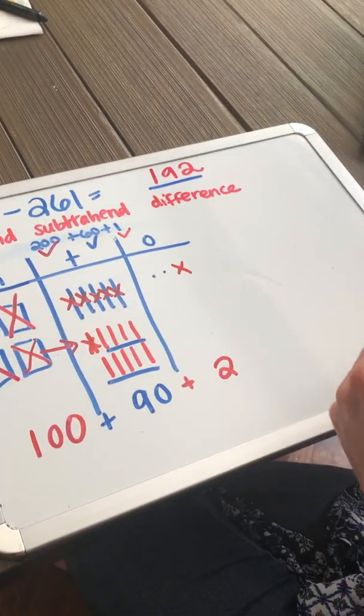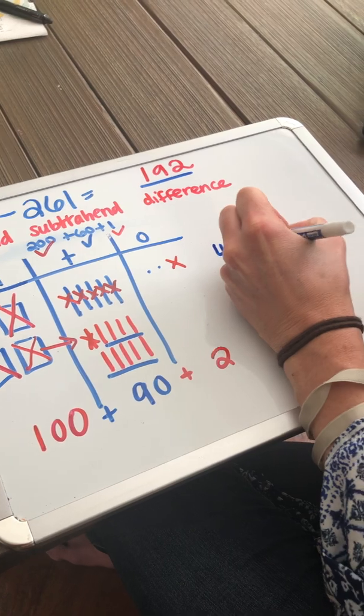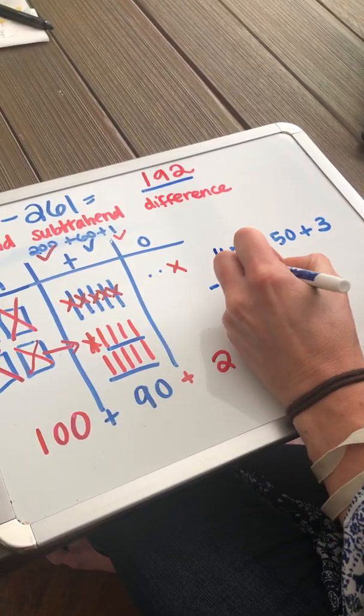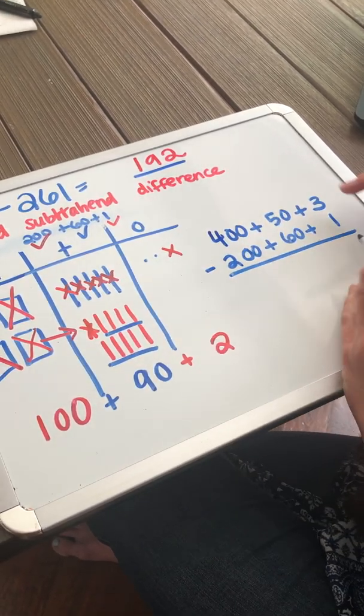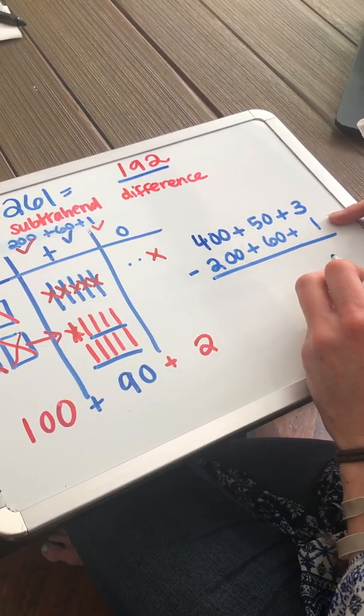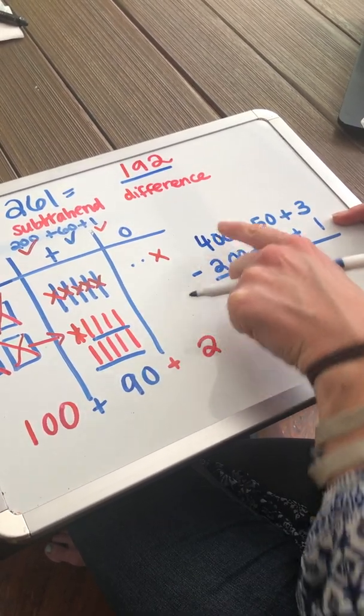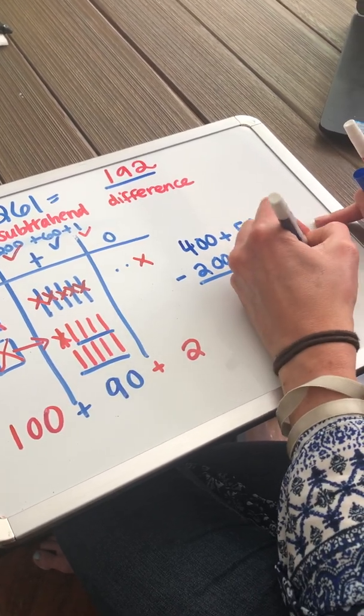Let's look at the same problem with expanded form. We have 453 and we are taking away 261. Three minus one is not a problem. Remember, we're not adding here, we're subtracting. This is just expanding the number. Three minus one is two. No problem.